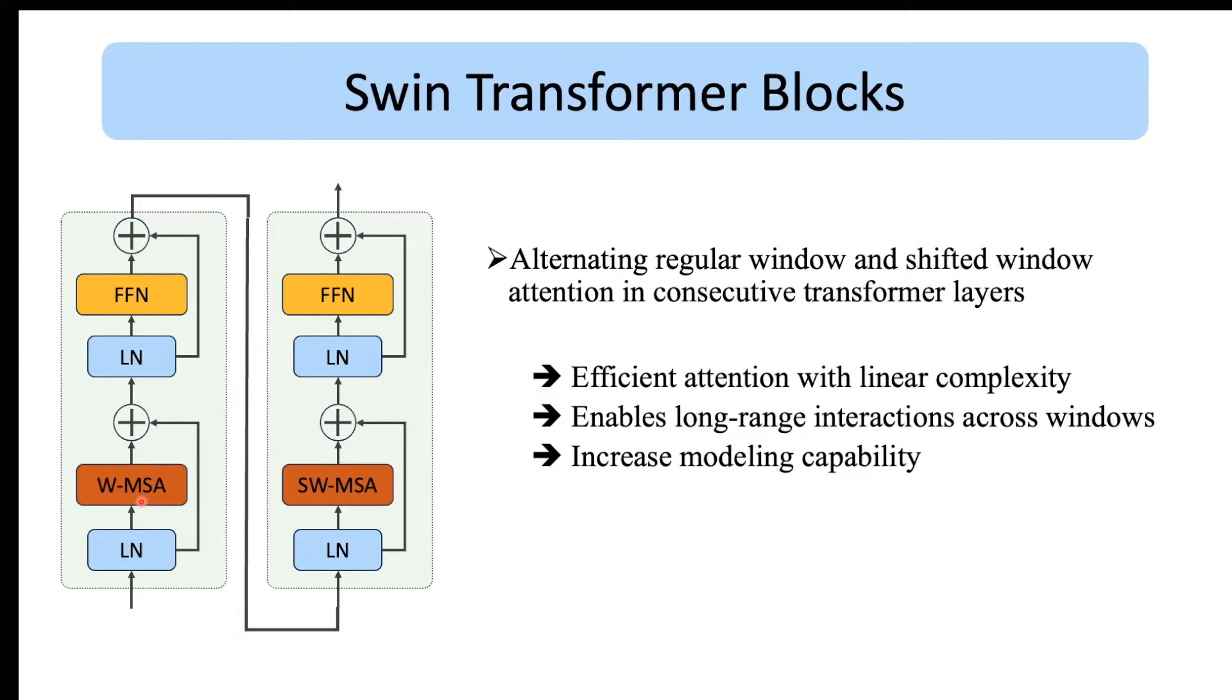Now moving to the main building block of the model architecture, which is a Swin Transformer block composed of two transformer layers. The first layer uses regular window-based attention, so the MSA block is denoted by W-MSA. The second layer is using a shifted window-based attention, so it is denoted by SW-MSA. These two consecutive layers form a single Swin Transformer block and they provide efficient attention that is linear with respect to the number of tokens while enabling long-range interactions with the overlaps between windows.